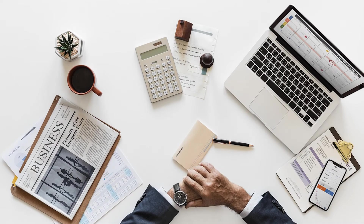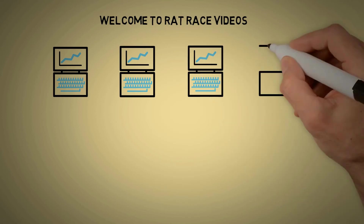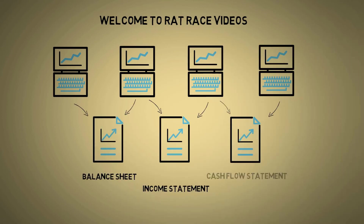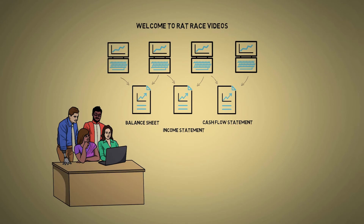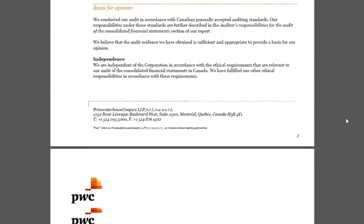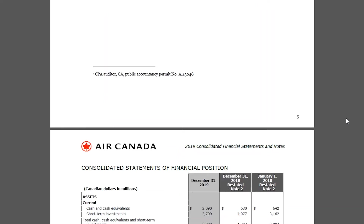Hello guys, welcome back again. I'm starting a series of videos which will explain three financial statements and all related ratios that investors and analysts use to make better sense of a company. For the purpose of learning, we'll be using Air Canada's annual report of 2019. In this video, we'll take a thorough look at the balance sheet of Air Canada.